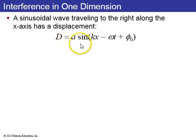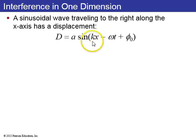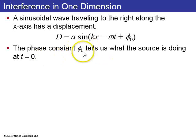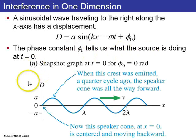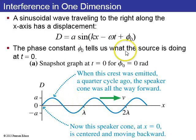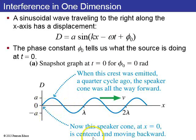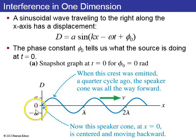The math looks like this. Any sinusoidal wave is A times sine of kx minus omega t plus phi sub zero. K is the wave number, omega is the angular frequency of the wave, and phi sub zero is the phase constant. It tells us what the source is doing at t equals zero. Here's a snapshot of this wave at t equals zero. If phi sub zero equals zero radians, this looks like a normal sine wave starting at the origin — the speaker cone is at its equilibrium position.